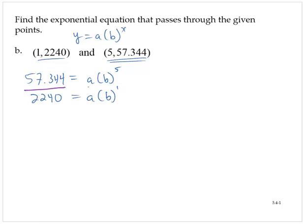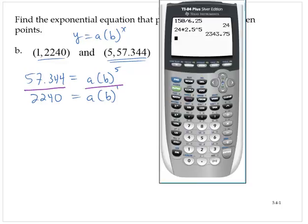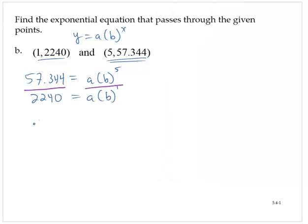Dividing the left-hand sides and dividing the right-hand sides, 57.344 divided by 2240 is 0.0256. a's divide out. b to the fifth divided by b to the first is b to the fourth.